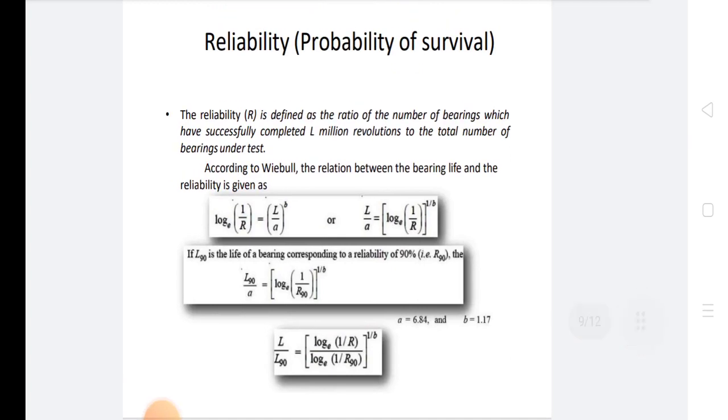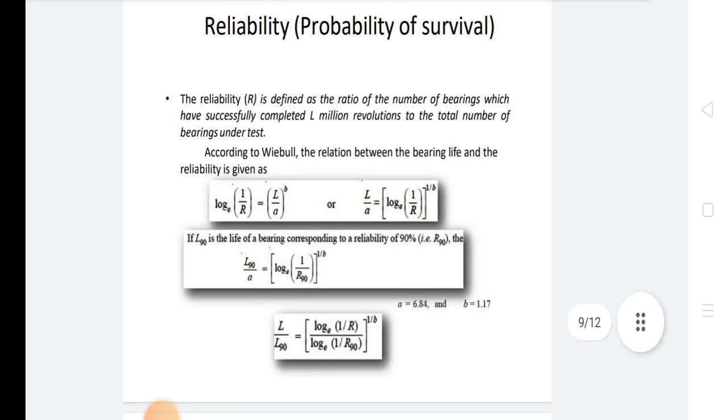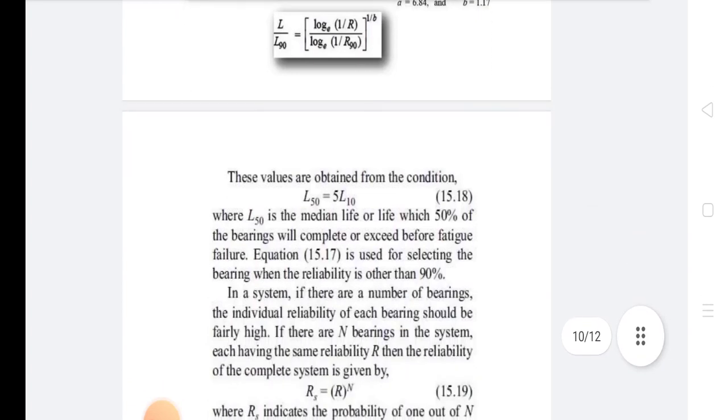In reliability or probability of survival, the reliability R is defined as the ratio of the number of bearings which have successfully completed L million revolutions to the total number of bearings under test. According to Weibull, the relation between the bearing life and the reliability is given.